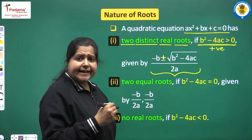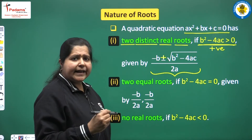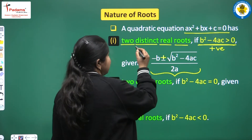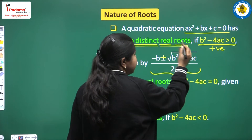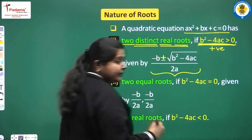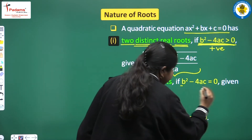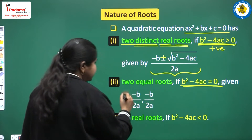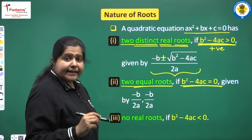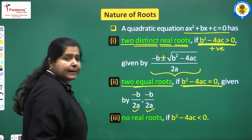We have some examples where we get two distinct roots — that happens when b² minus 4ac is greater than 0. Now, if b² minus 4ac is equal to 0, then the equation will have two equal real roots, and those roots are given by −b/2a and −b/2a.